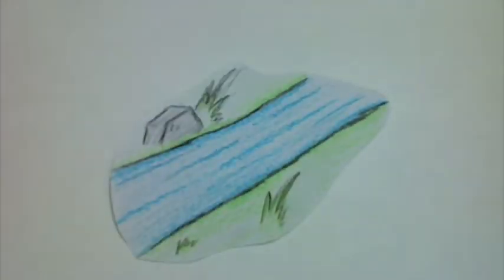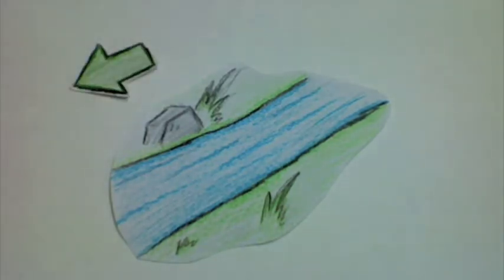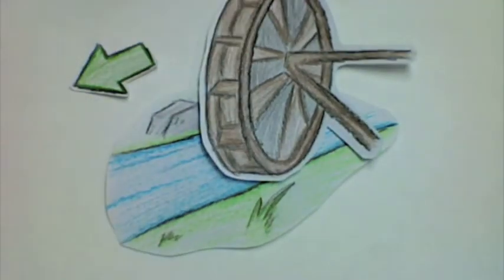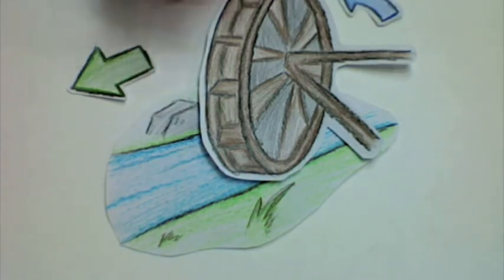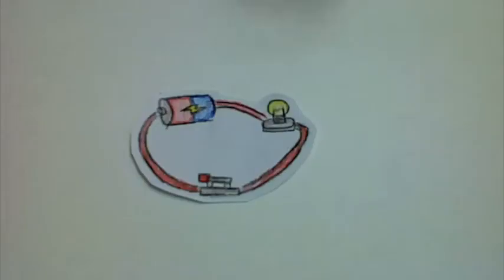Think of the electrical current as water flowing down a stream. The water wants to move downstream, but the water wheel is blocking the way. The water is forced to turn the wheel, much like the electrical energy is forced to light the lightbulb back in the circuit.